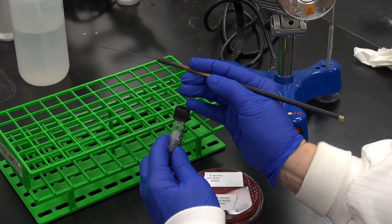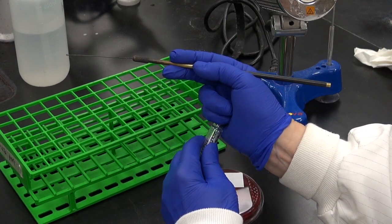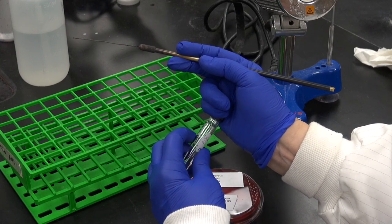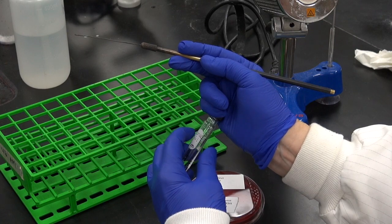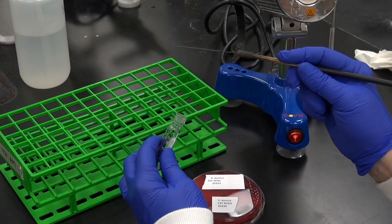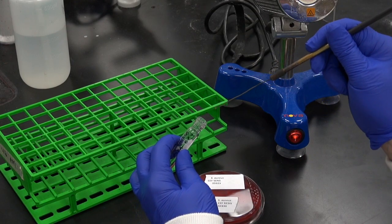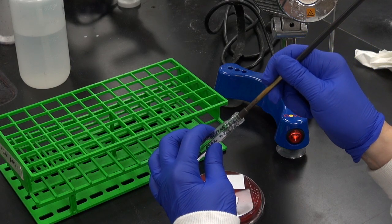Still holding the loop, remove the cap from the tube with the pinky finger of your dominant hand. Place the loop containing the bacteria from the colony you touched into the broth, trying not to touch the open edges of the tube.